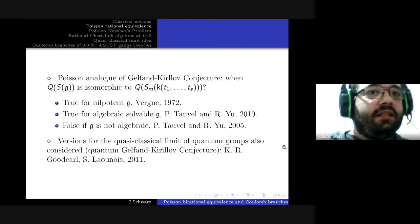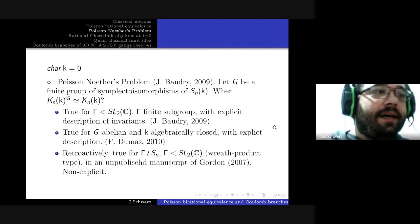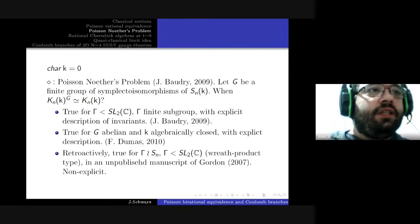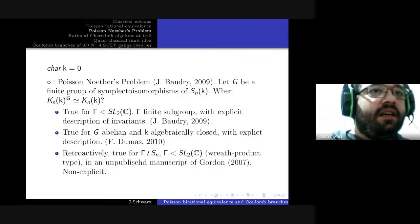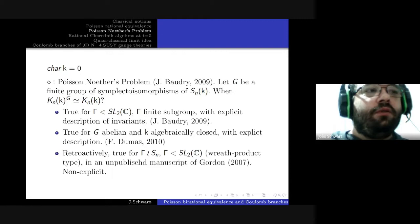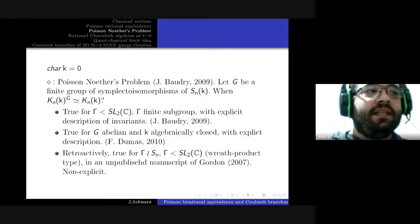An example of the kind of questions we are interested in — our original contribution — is the classical limit of non-commutative Noether's problem: namely, Poisson Noether's problem, considered by Julie Baudry, a student of Jacques Alev. The question is: let G be a finite group of symplectomorphisms of the standard Poisson algebra — when is the invariant of the standard Poisson field isomorphic to the Poisson field itself?